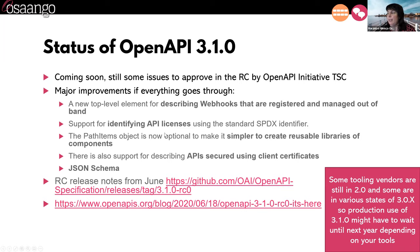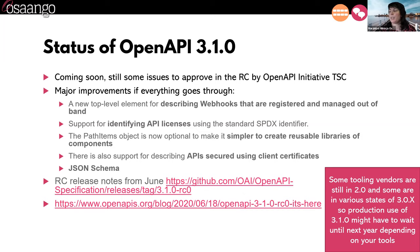The idea of 3.1.0 was to include important things like how to describe webhooks — this subscription-based webhook handling that is an important part of the push versus pull paradigm. Also identifying API licenses, which is a really important topic given the complexity of API licensing models. Things like reusability of components — request and response samples and schema — which RAML originally had, are now coming into OpenAPI. There are also some security improvements, like client certificates.